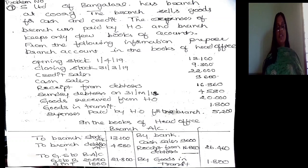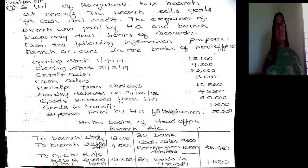Now, listen carefully. Nowhere in the problem is there a sentence with regard to the type of branch. Nowhere in the problem is there a sentence with regard to the system of accounting to be followed. But the problem does say we have to prepare the branch account in the books of head office. The question arises — particularly for an exam — how can we understand this is a problem on dependent branches, how do we know to follow the debtor system, and how can we identify whether goods are sent at cost or invoice price? These are the three important questions to be answered.